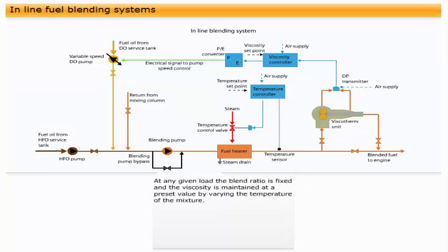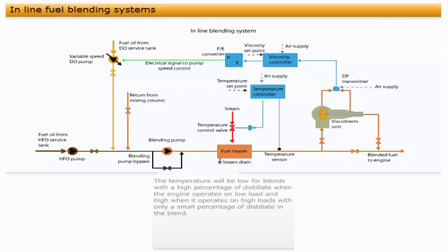At any given load, the blend ratio is fixed, and the viscosity is maintained at a preset value by varying the temperature of the mixture. The temperature will be low for blends with a high percentage of distillate when the engine operates on low load, and high when it operates on high loads with only a small percentage of distillate in the blend.